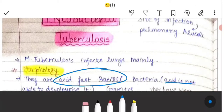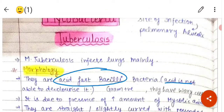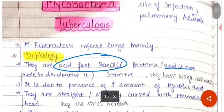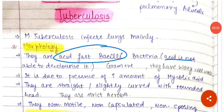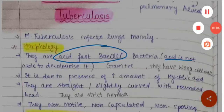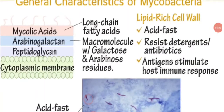Acid-fast means that acid is not able to decolorize it. It is gram-positive and has a waxy cell wall due to the presence of high mycolic acid. The bacteria are slightly curved with rounded ends. They are strict aerobes, non-motile, non-capsulated, and non-sporing. Their cell wall is lipid-rich, and they resist antibiotics.